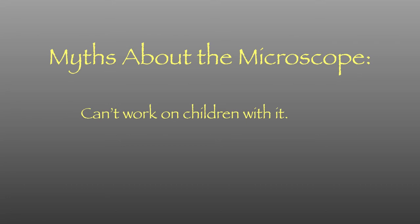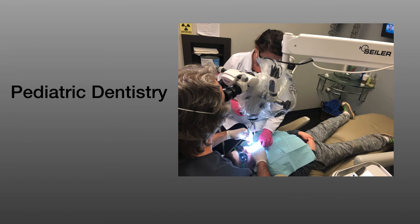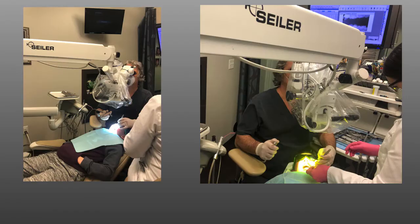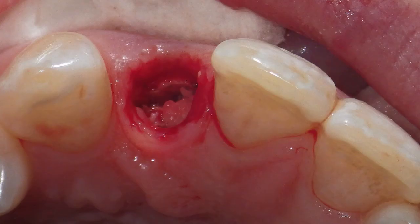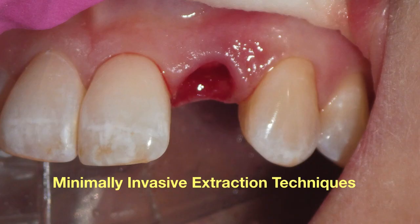Another myth about the microscope is that you can't work on children with it. Pediatric dentistry is actually easier with the microscope — the kids can watch what's going on, it's less scary, and they're more cooperative. Oral surgery procedures can also be done through the microscope. High magnification lets us perform minimally invasive extraction techniques for faster healing. Every procedure in dentistry can be done through the microscope.